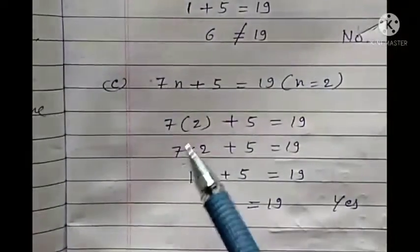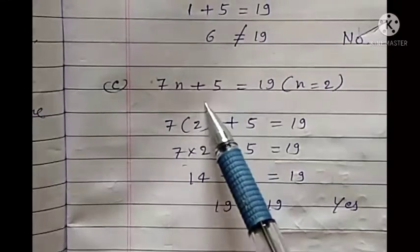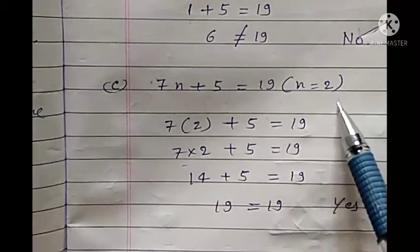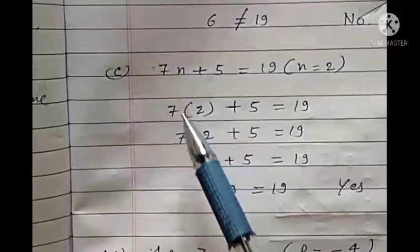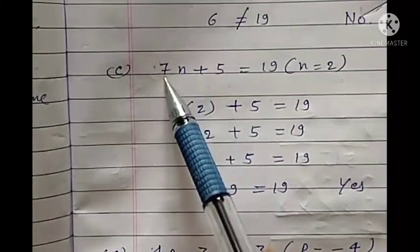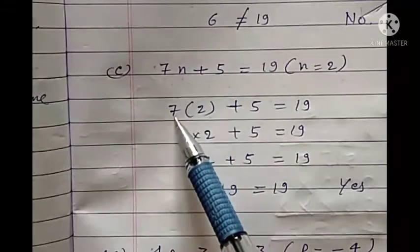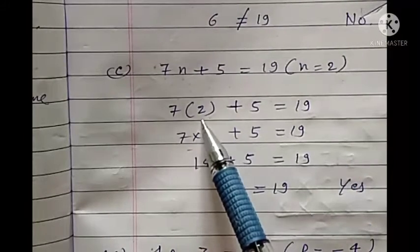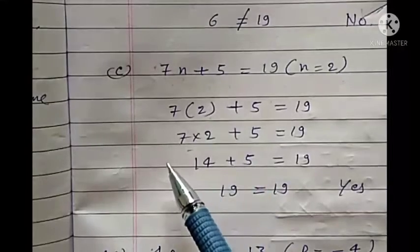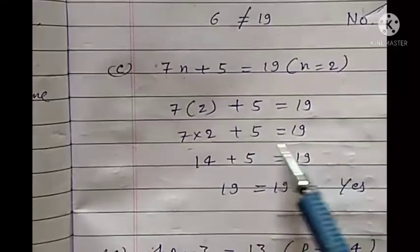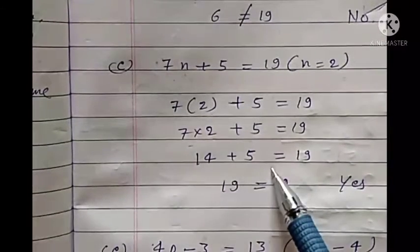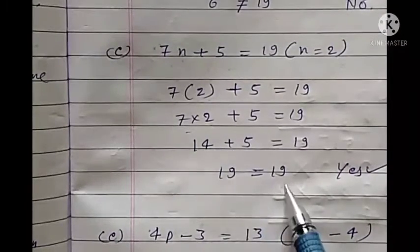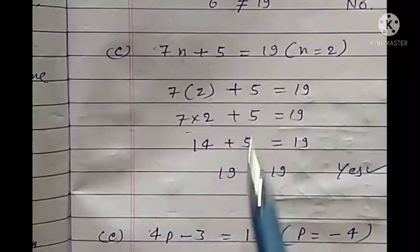Now we will do part (c): 7n plus 5 equals to 19, where n equals to 2. We have to put n equals to 2. So 7 times 2, because it means multiplication here, gives 14 plus 5 equals to 19. Now 14 plus 5 is 19, which equals 19. So this one is Yes — the two values are equal when n equals to 2.